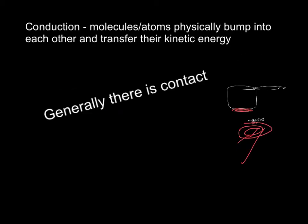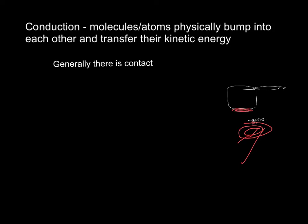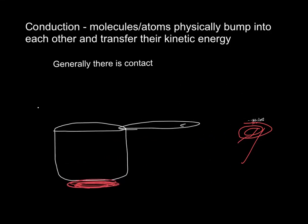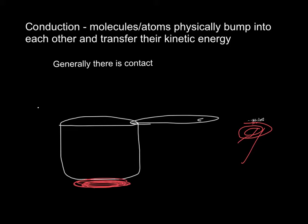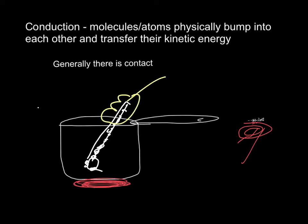In conduction, there is some sort of contact between two different materials and atoms within a material. For example, if we put a spoon into our hot pot, it transfers energy to the next part of the spoon, and the next, all the way up until you try to grab it — ouch, that's hot, because it's a metal spoon.